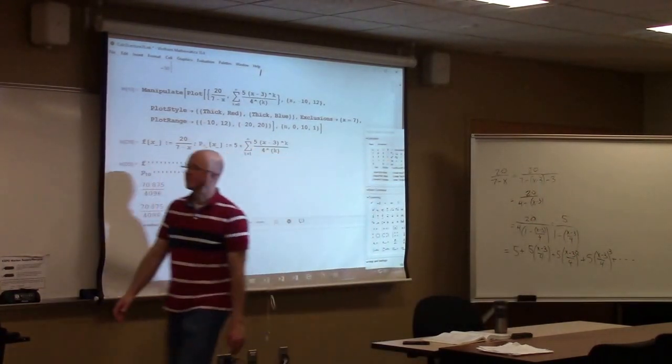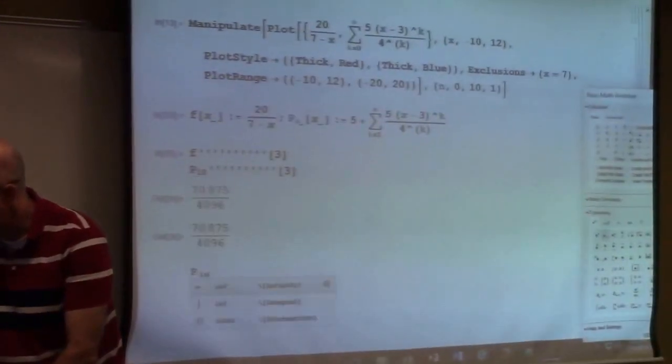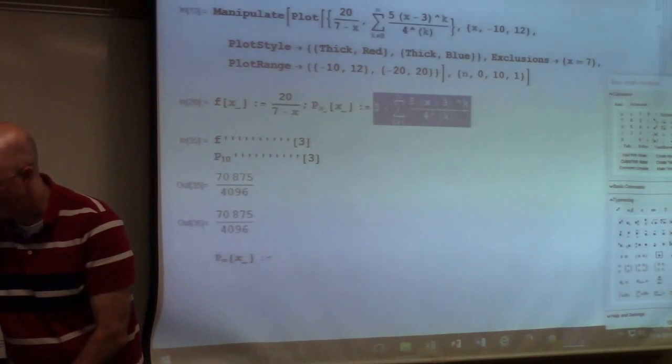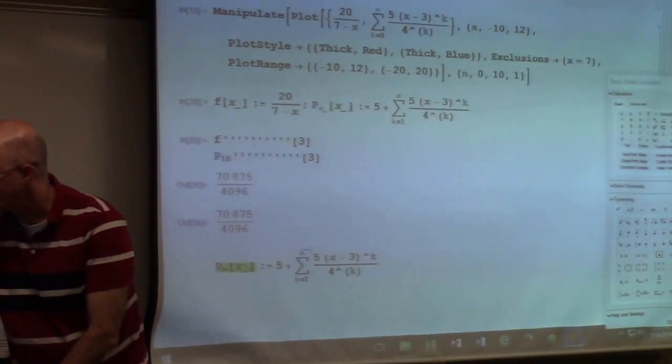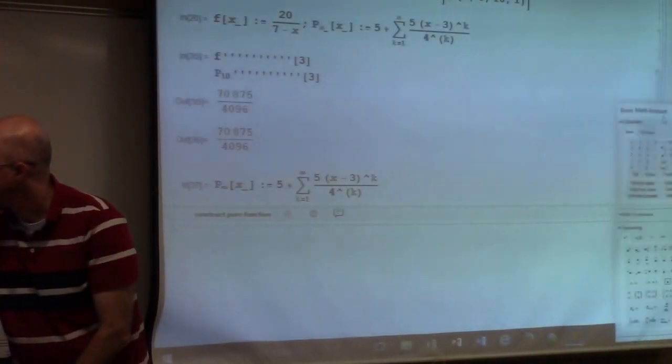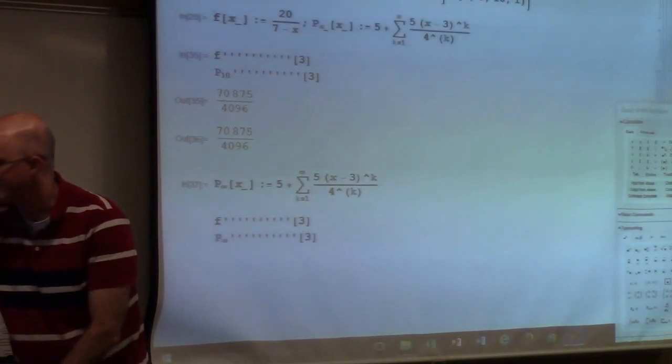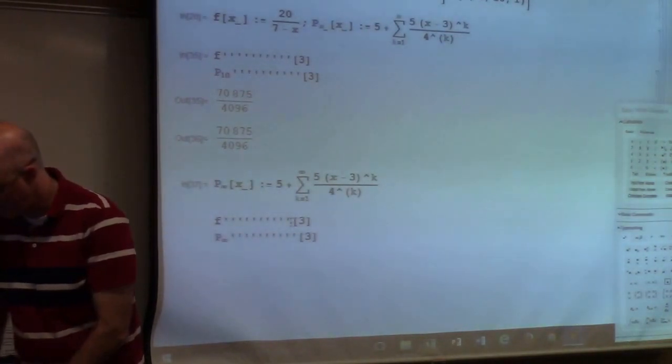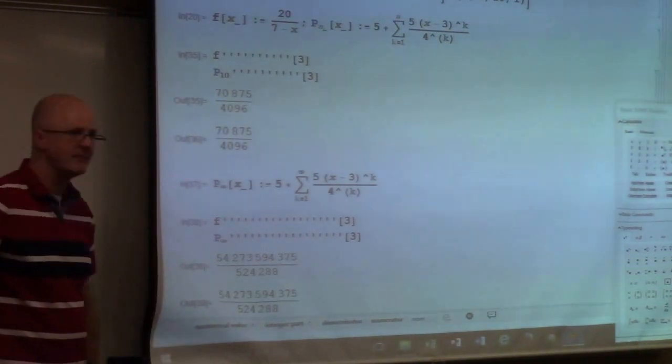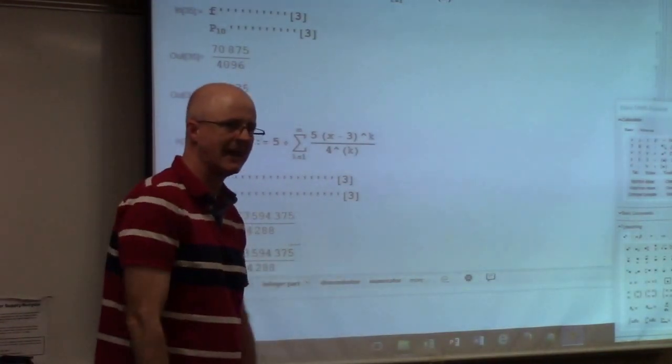If I used an infinite sum, maybe I'll even call it p sub infinity of x, then I'll copy and paste this, replace the n with an infinity. Then we're going to get the derivatives matching up, no matter how many primes we put in here. Let me add, just sort of arbitrarily, seven more primes. 1, 2, 3, 4, 5, 6, 7. They're the same.